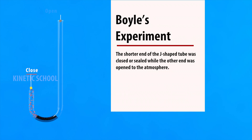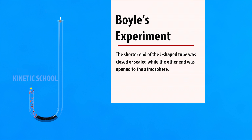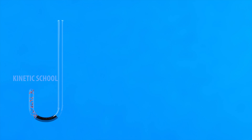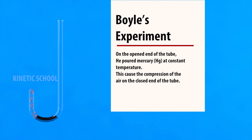The shorter end of the J-shaped tube was closed or sealed, while the other end was opened to the atmosphere. On the opened end of the tube, he poured mercury at constant temperature. This caused the compression of the air on the closed end of the tube.